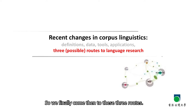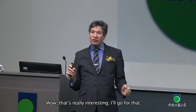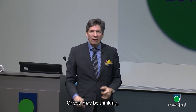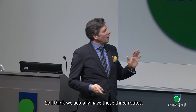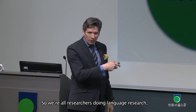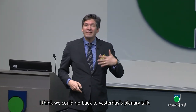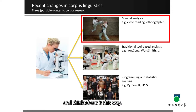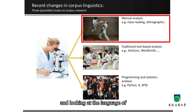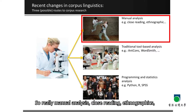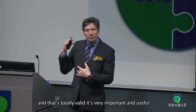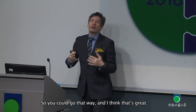We finally come to these three routes. If you listened to that first discussion, you may be thinking, wow, that's really interesting, I'll go for that — or you may be thinking, this is beyond me. I think we actually have three routes. We're all researchers doing language research, but where do we want to go? Yesterday our keynote speaker was talking about a single karate dojo in the London district, looking at the language of basically two people — really manual analysis, close reading, ethnographic — and that's totally valid. It's very important and useful.